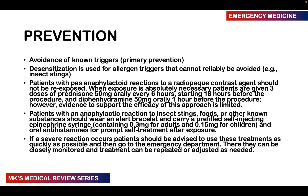In terms of prevention, you should avoid the known triggers — that's the primary prevention. If you can't avoid the triggers, then desensitization can be done. This is where the inciting agent is introduced in small amounts and concentrations so that you stimulate the body to make IgG. The IgG that you're making is going to be competing with the IgE and prevent the IgE from binding on the mast cells — that's the whole principle behind desensitization.